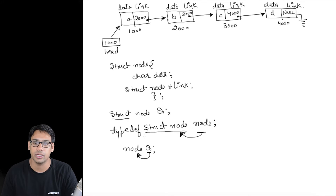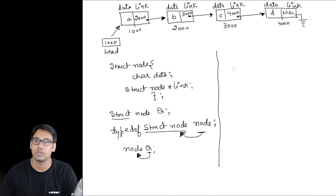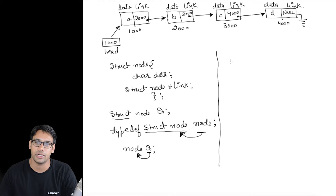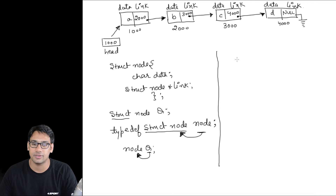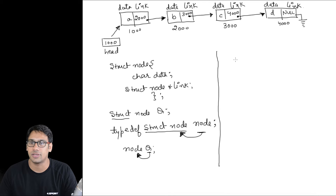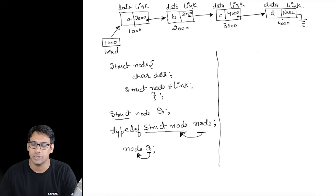In the case of linked lists, we don't initialize a variable directly. Instead, we allocate memory using the malloc function, which returns the address of that node, and store it into a pointer of type node. Let's write a createNode function that creates a node and returns the address of the newly created node.